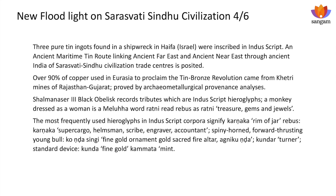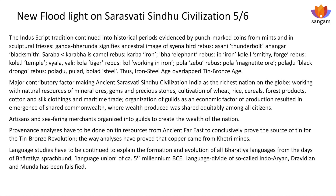The Induscript tradition continued into historical periods, evidenced by punch mark coins from mints and cultural friezes. 'Gunda/Verunda' signifies ancestral image; 'Gunda' means ancestral image of a Sena bird. 'Asani' = thunderbolt; 'Ahangar' = blacksmith. 'Saraba' derived from 'Karaba' — in the Centum-Satem breakup of Indo-European languages — is camel, rebus 'Karba' = iron. 'Iba' is elephant; 'Ib' = iron. 'Kolel' is a smithy and forge; 'Kolel' is also a temple. 'Vyala/Yaali/Kola' = tigers, rebus 'Kola' = working in iron. 'Pala' zebu, rebus 'Pala' = magnetite ore. 'Paladu' = black drango, rebus 'Paladu/Palad/Polad/Bolad' = steel. Thus iron-steel age overlaps tin bronze age.